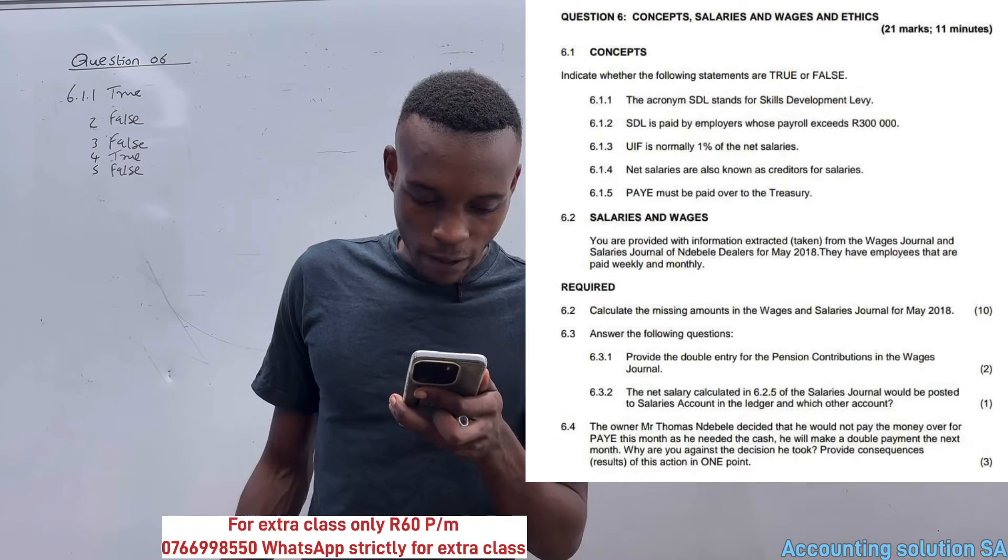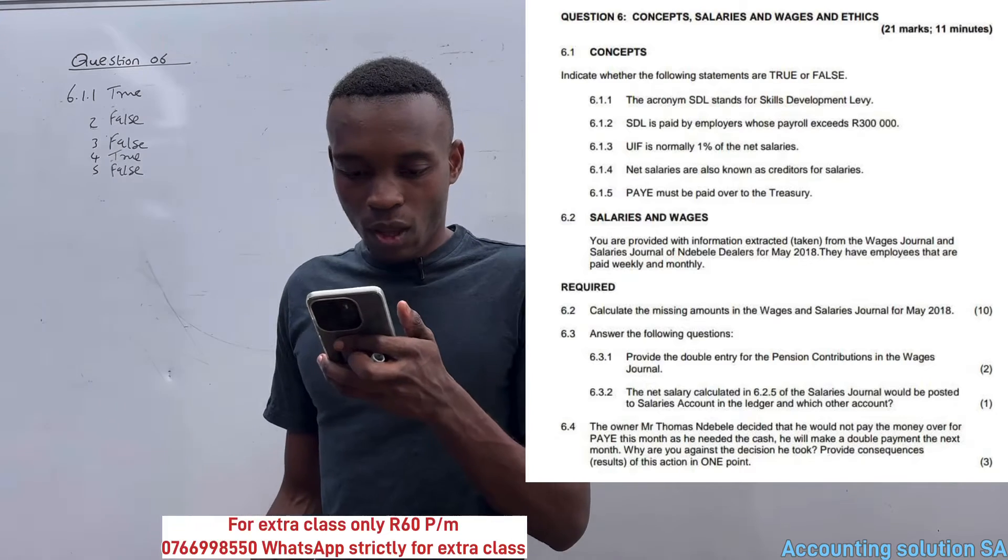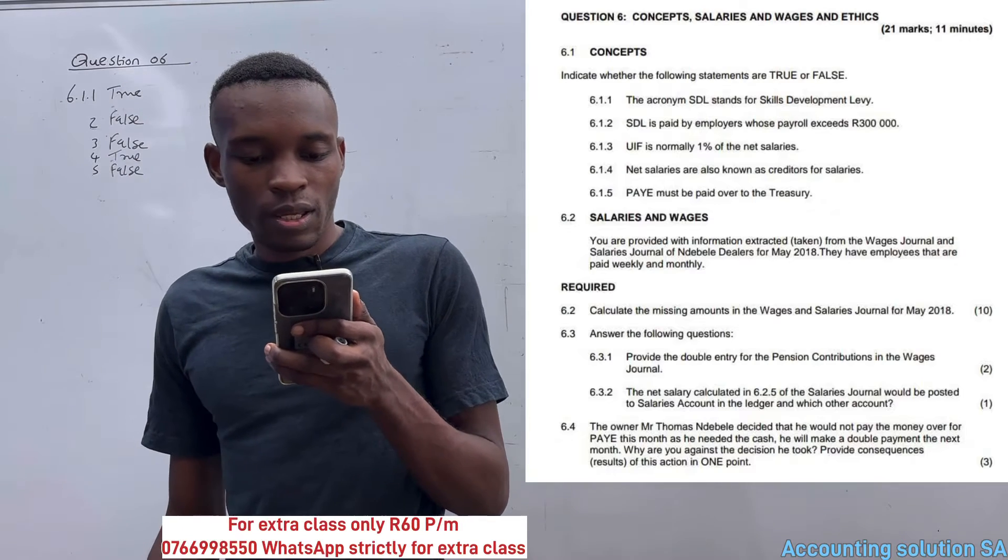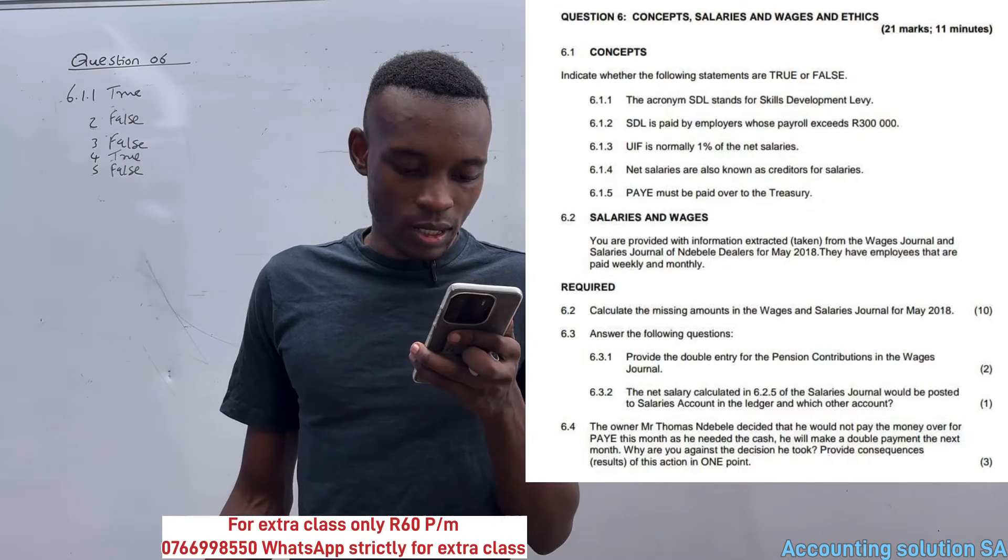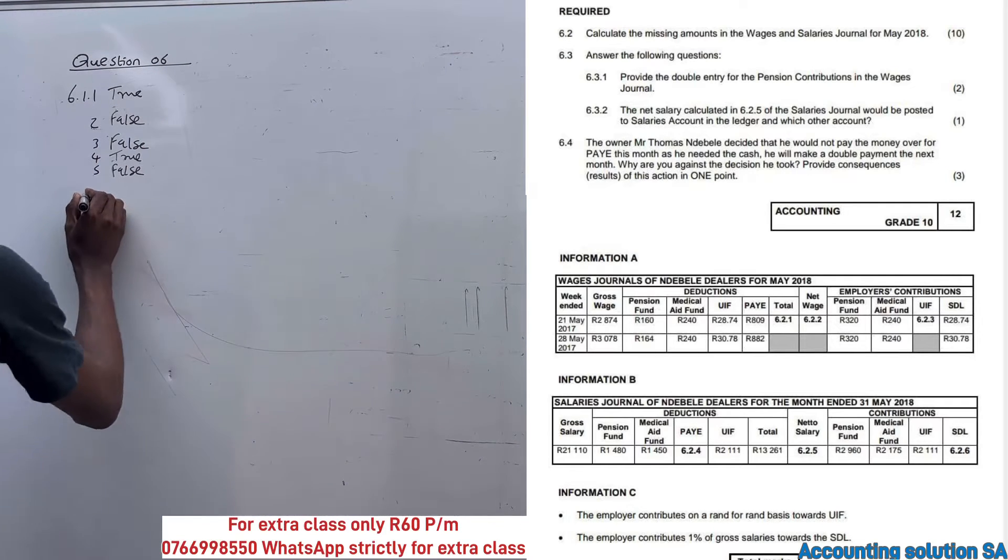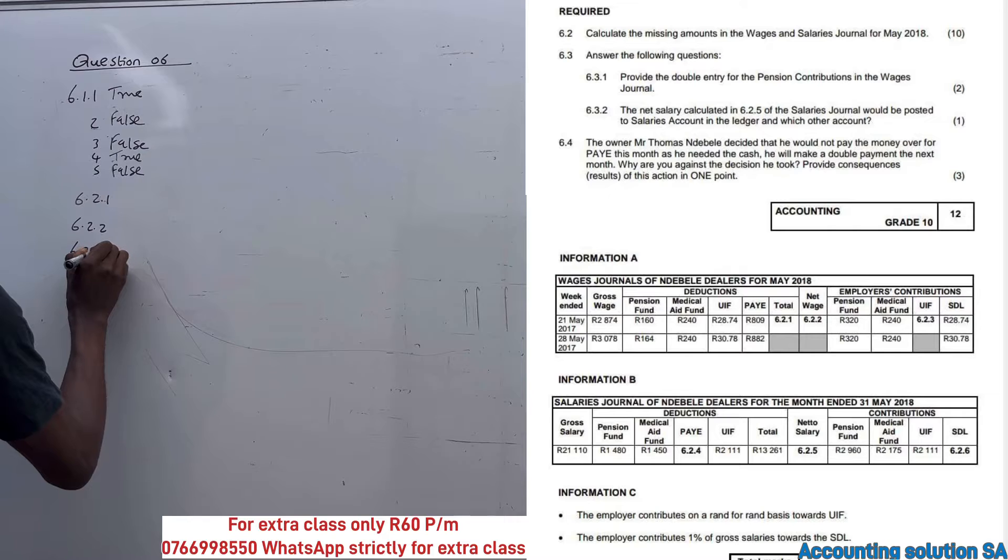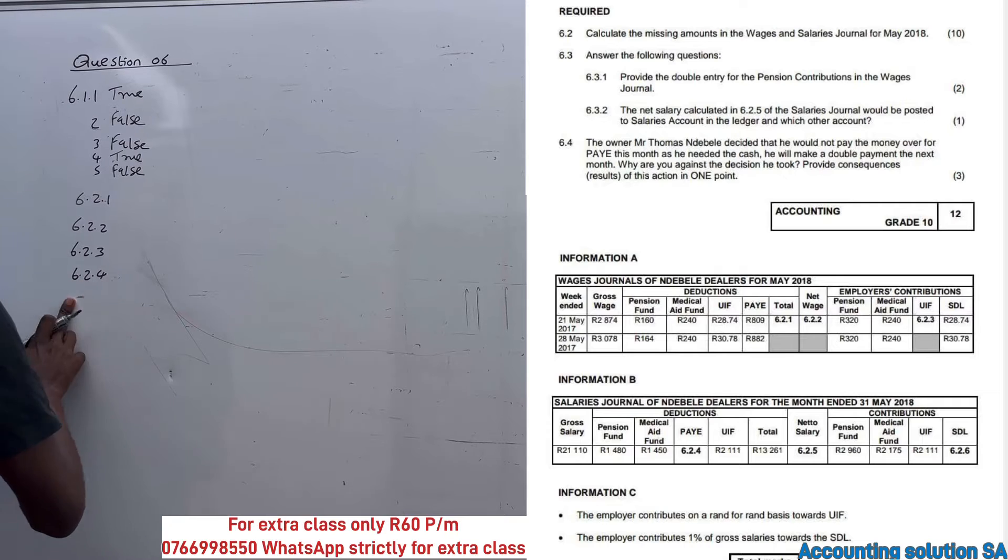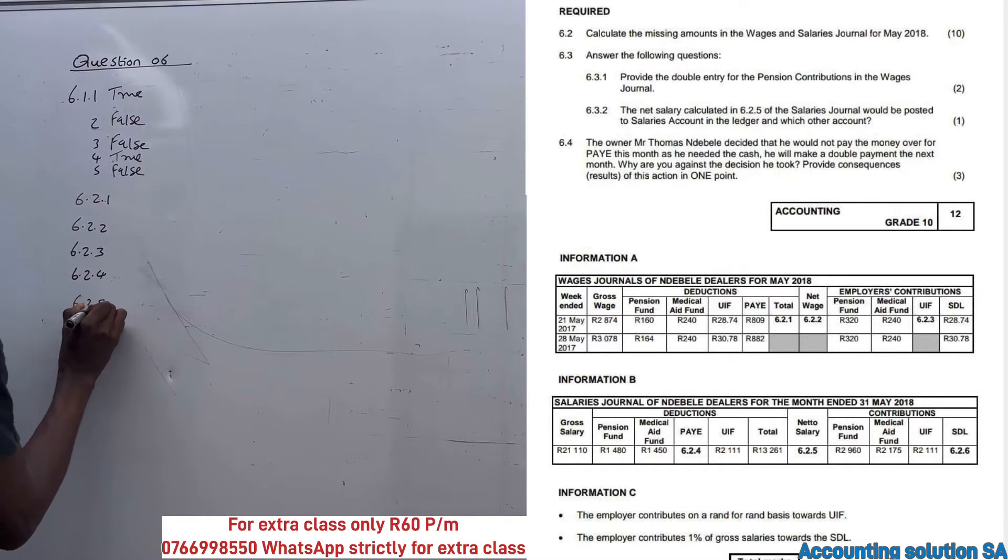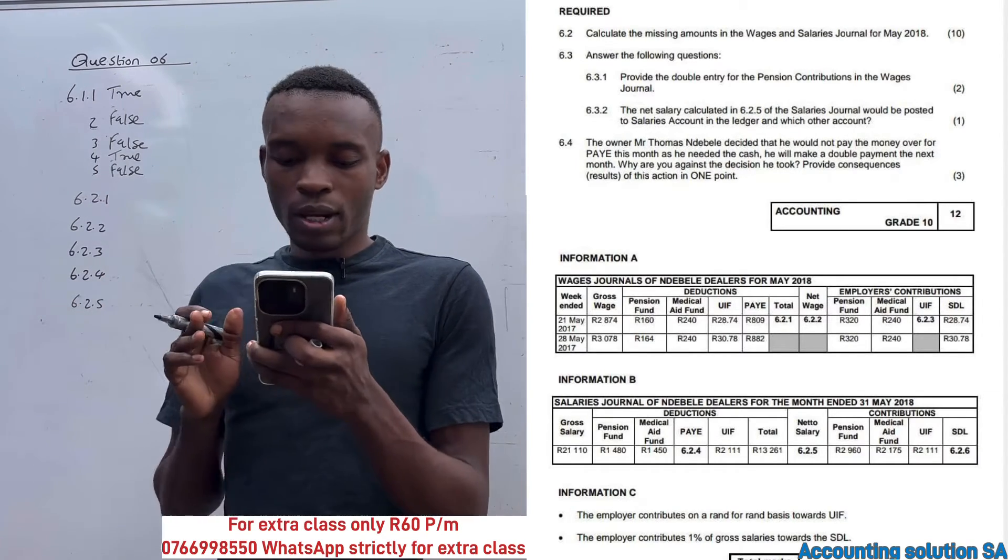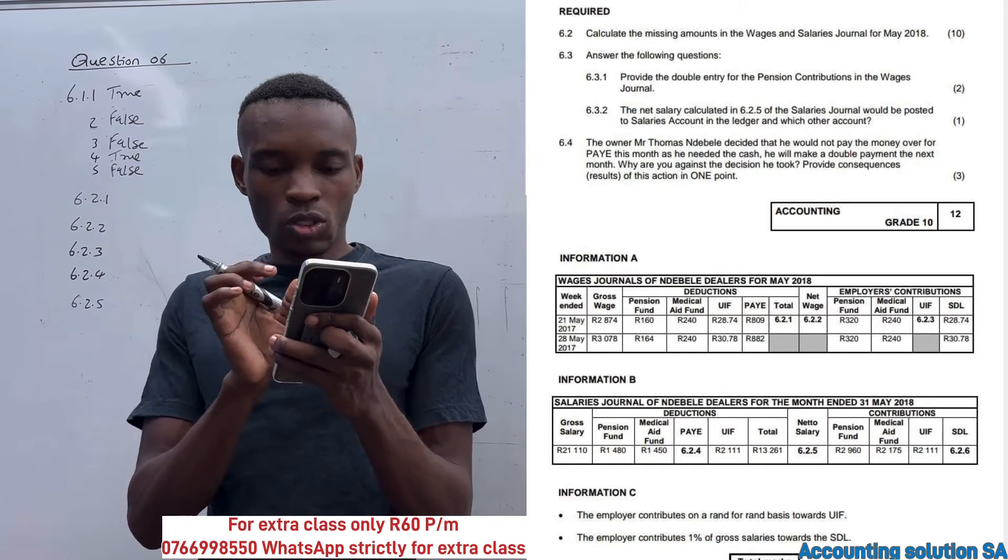Now let's prepare 6.2 which says calculate the missing amounts in the Wages and Salary Journal for May 2018. It has been indicated by 6.2.1 and 6.2.2, we have 6.2.3 and we also have 6.2.4 and 6.2.5. In other question papers, like the one I did in the previous video, we were required to calculate everything, so make sure that you also know how to calculate everything.